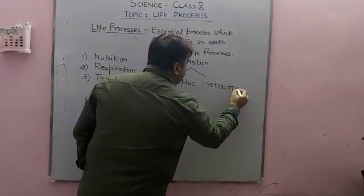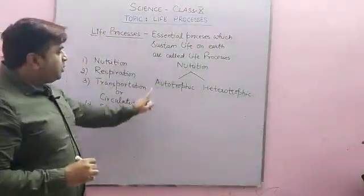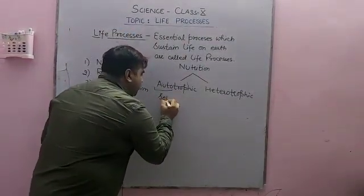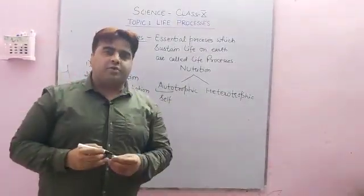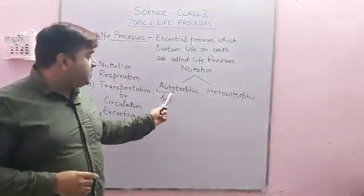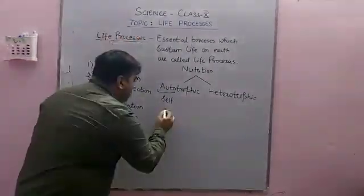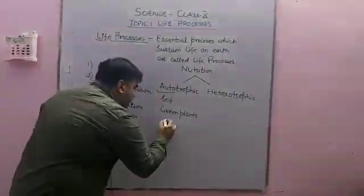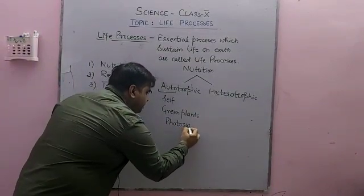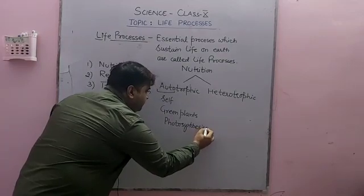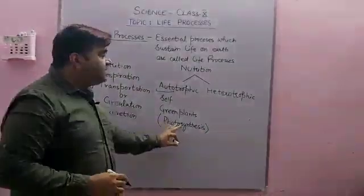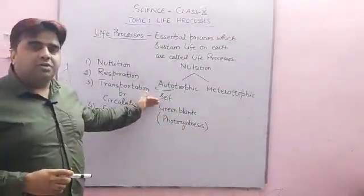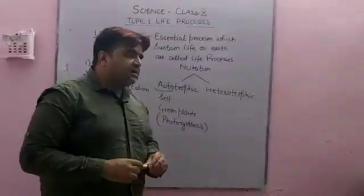Autotrophic and Heterotrophic modes of nutrition were studied in 7th grade. Autotrophic is a word made up of two parts: Auto, meaning Self, and Trophic, meaning Nutrition. So Self-Nutrition is called the Autotrophic mode of Nutrition. The organisms that come under Autotrophic nutrition are only the green plants, and the process involved is called Photosynthesis. Because of photosynthesis, green plants prepare their own food, and that is why they are known as Autotrophs.